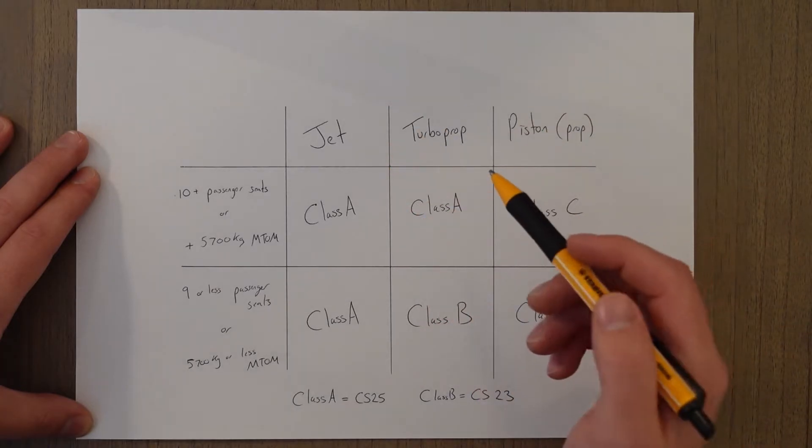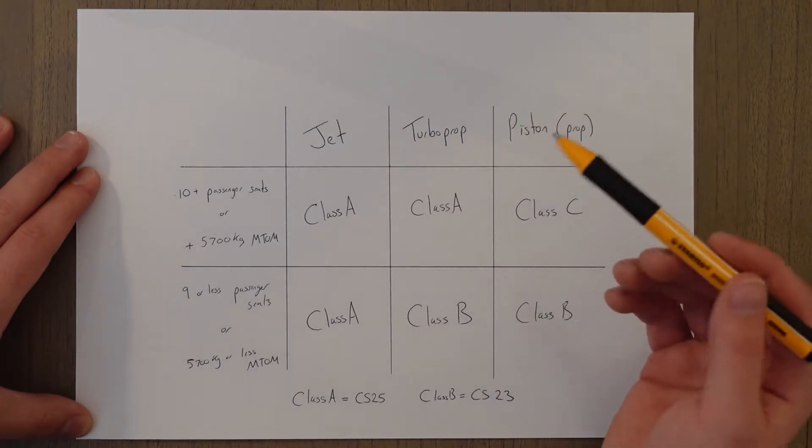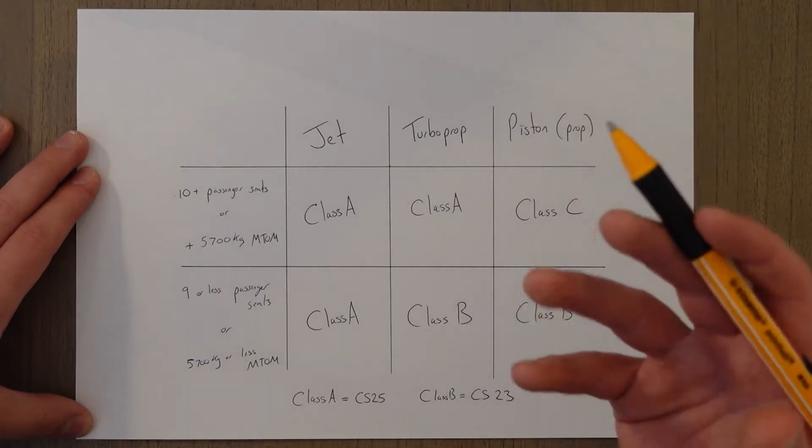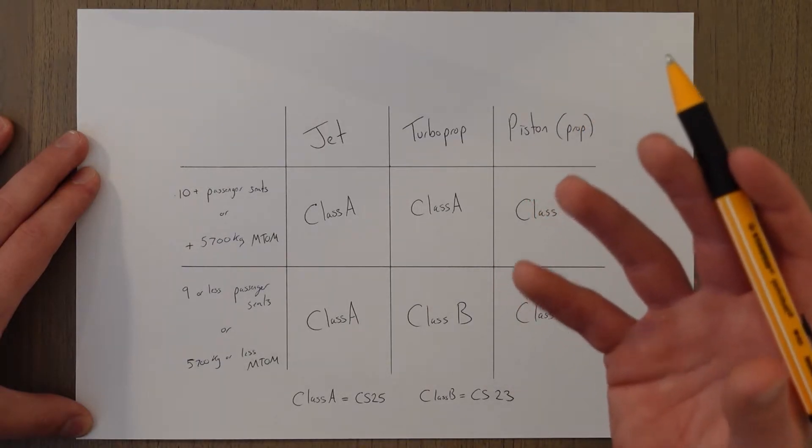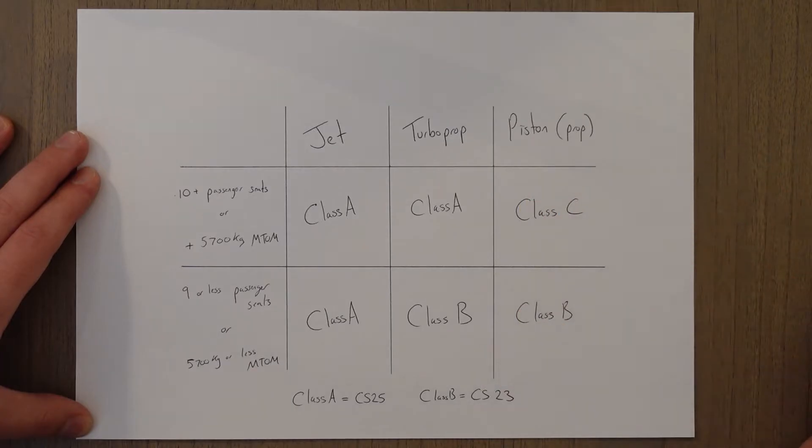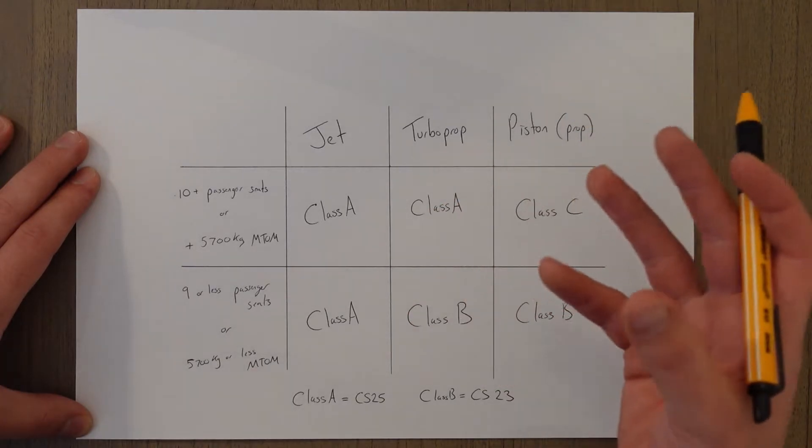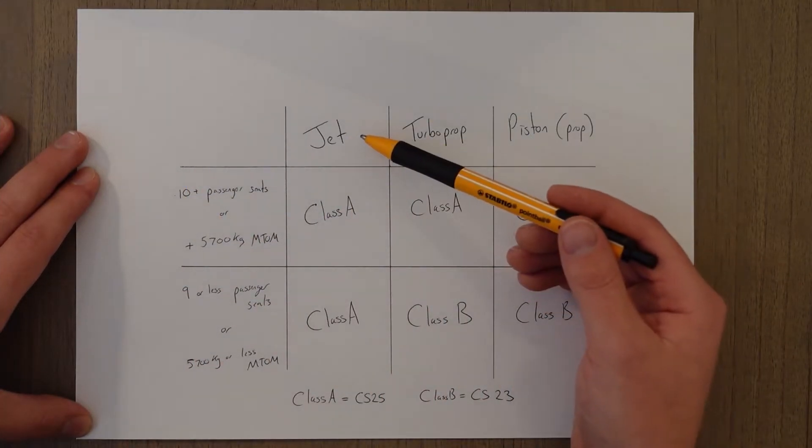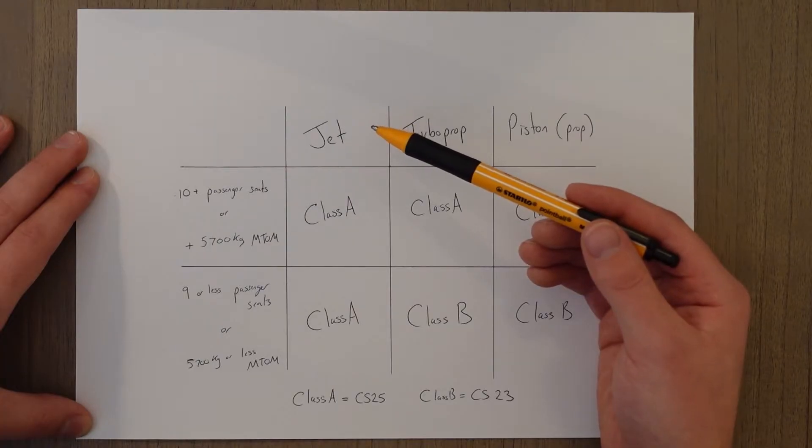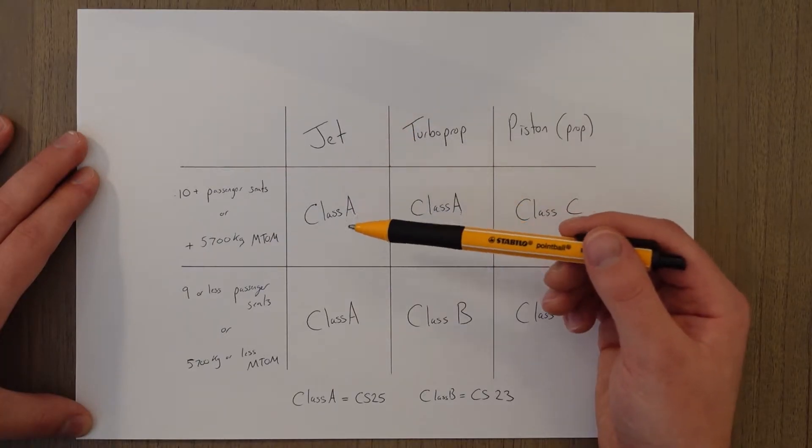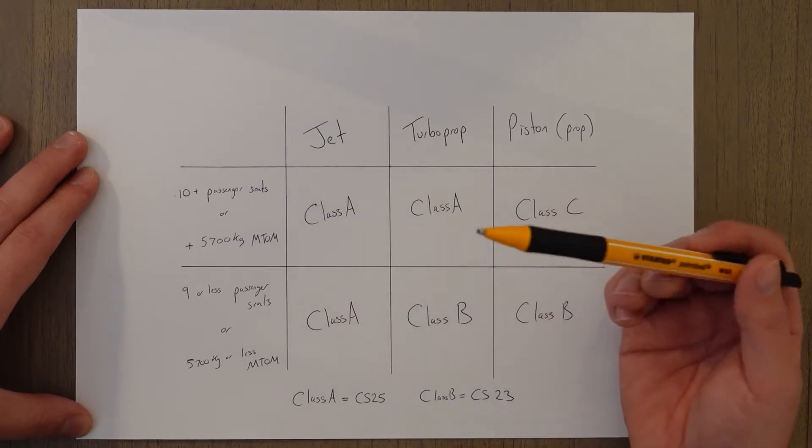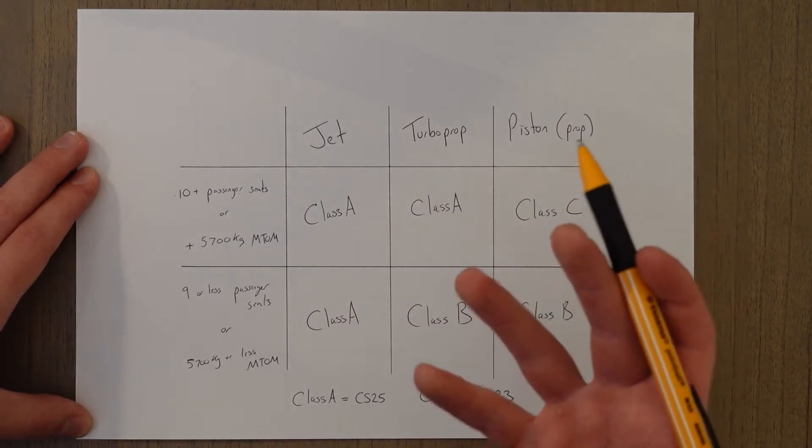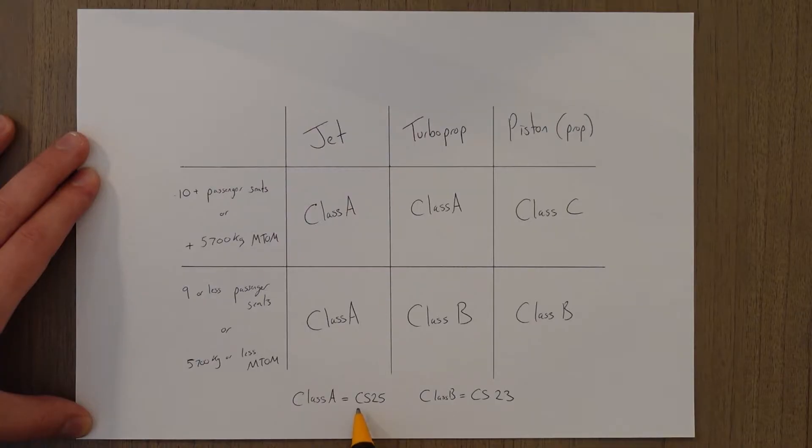Aircraft generally these days fall into one of two categories. You get big jets and turboprops for transport, and you get smaller things as well for smaller flights. As we can see, we have a multi-engine jet aircraft that's any aircraft that you would see at a big airport falls into this Class A categorization, and that means that we've got to achieve certain performance standards which are set out in a document called CS25, certification specification 25.